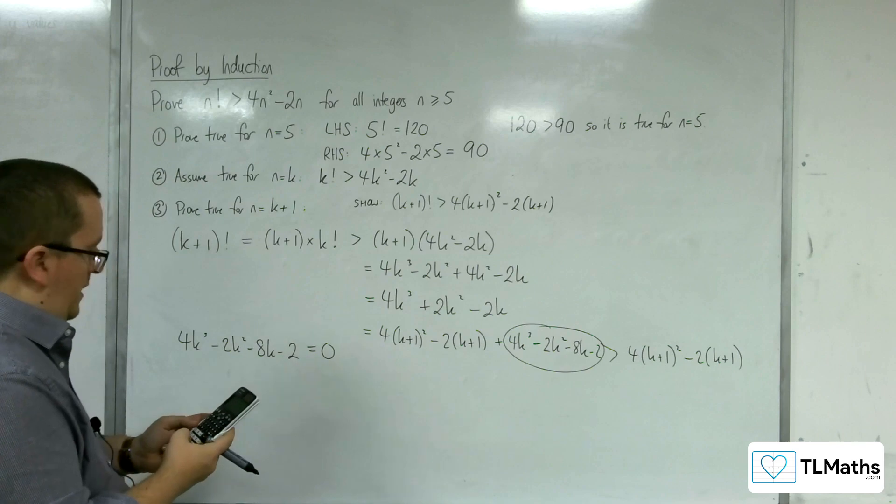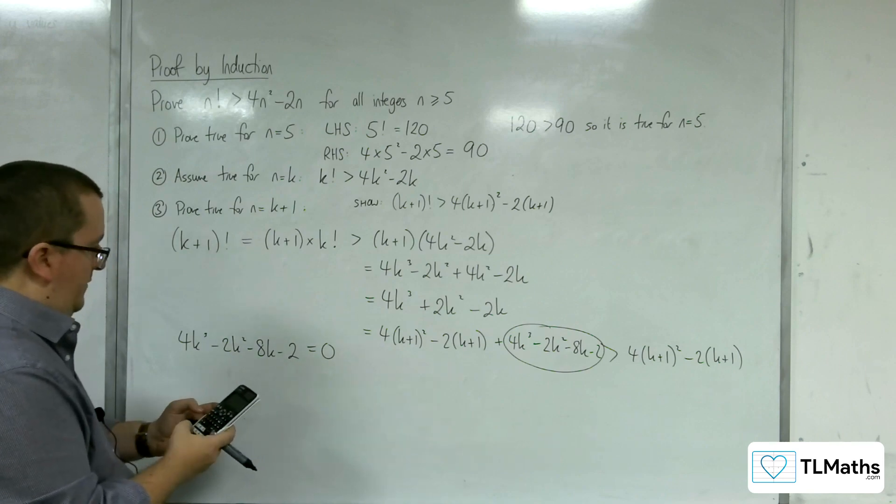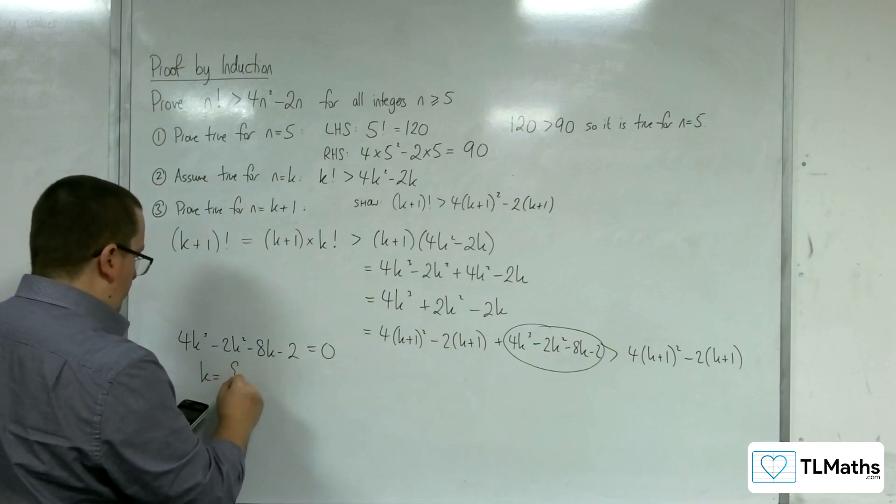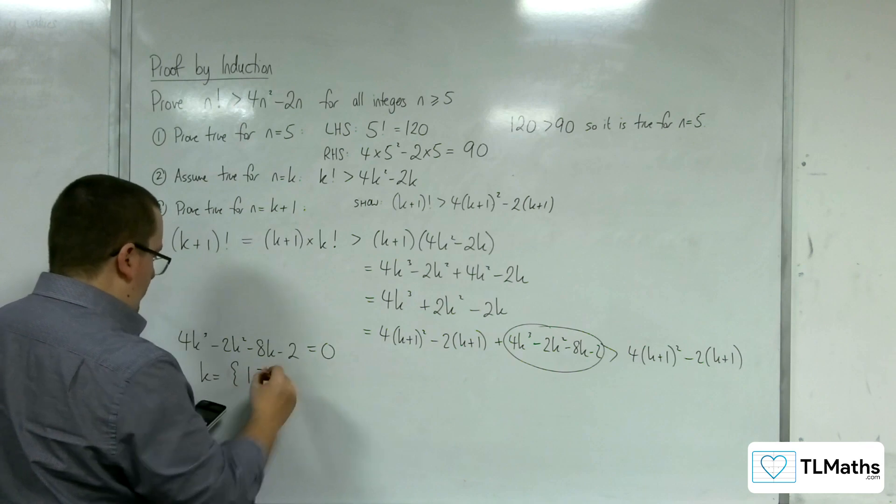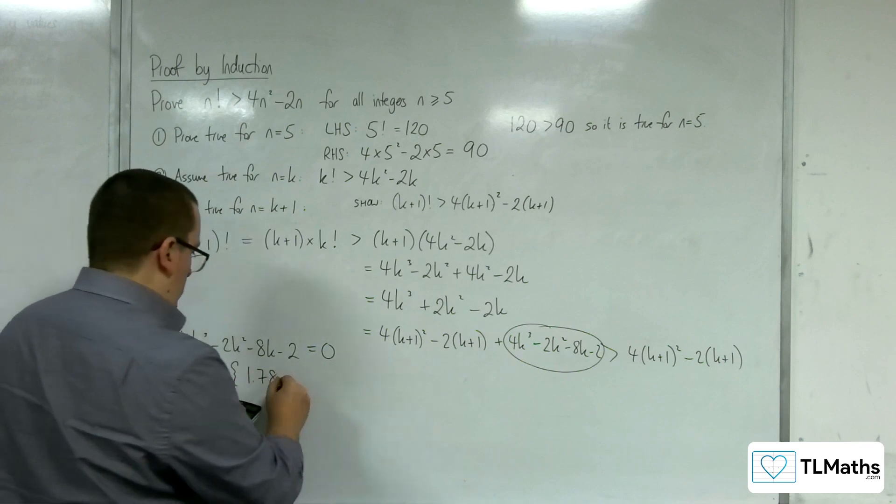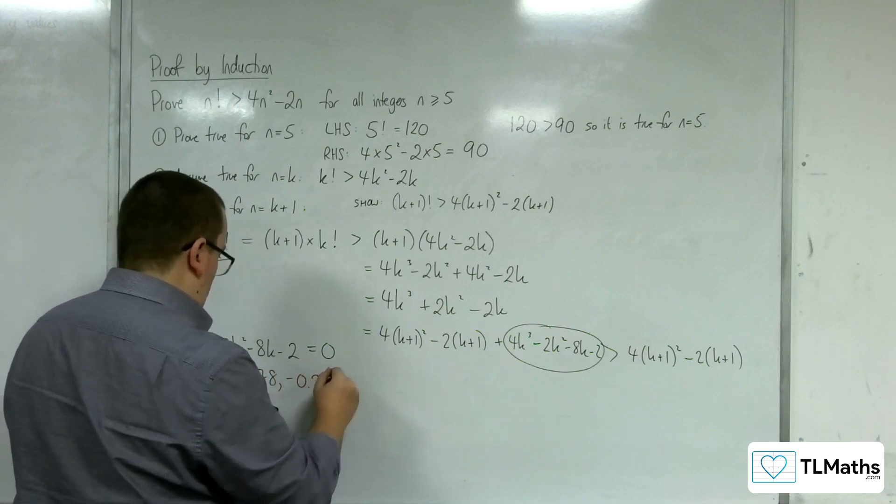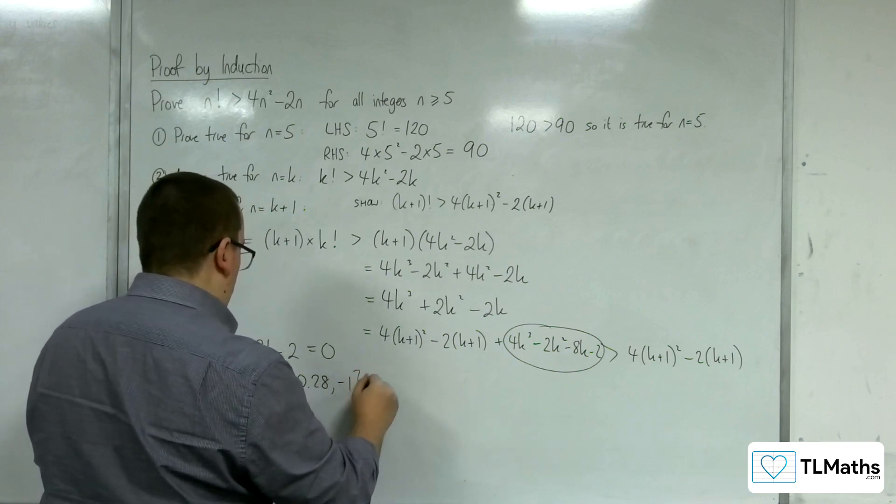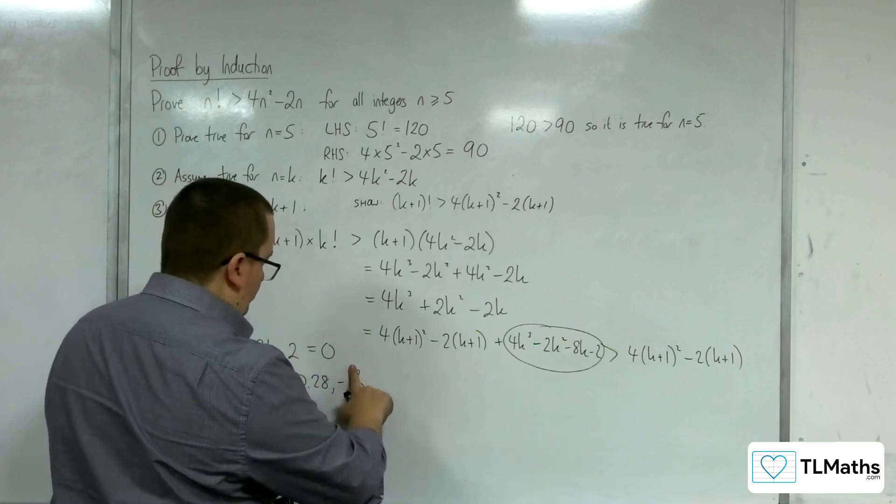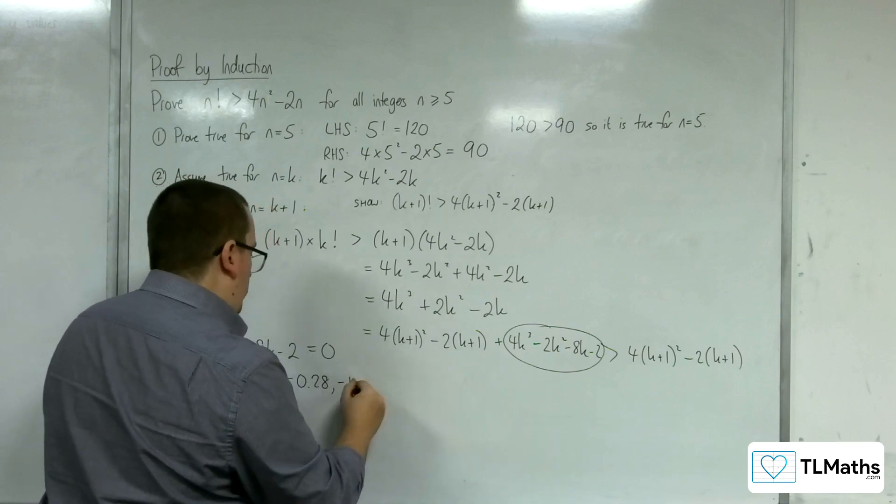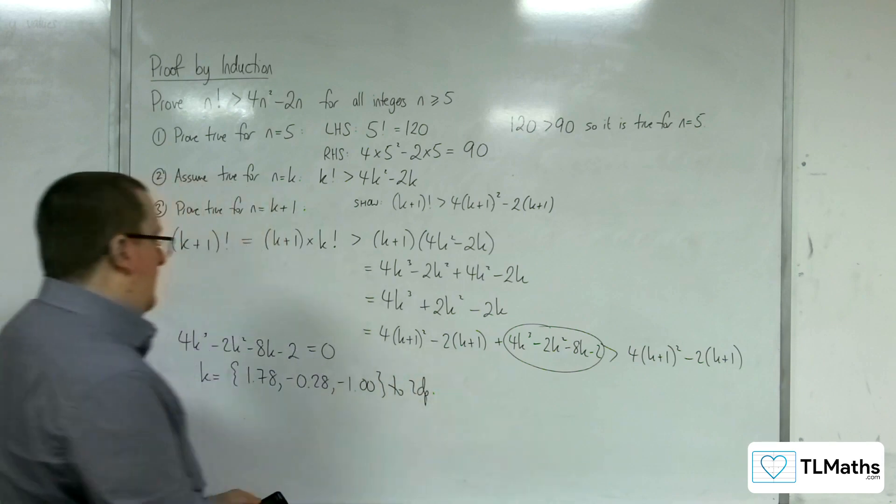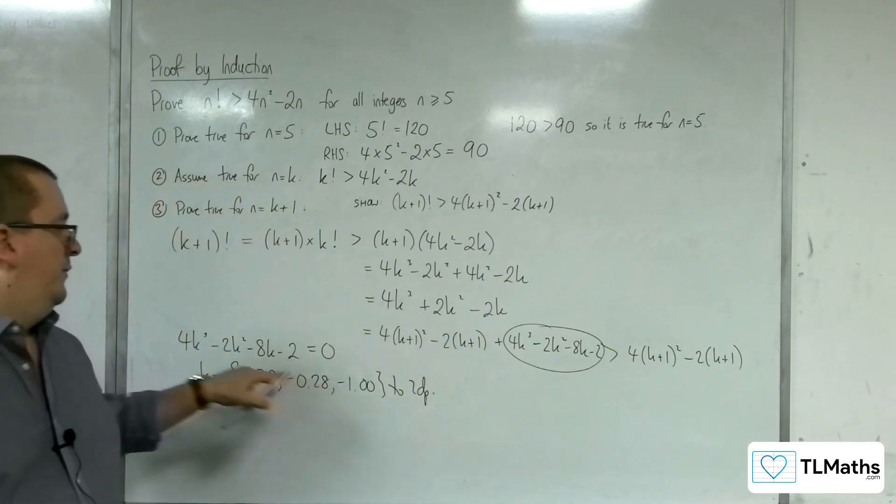So cubic 4, negative 2, negative 8, negative 2, and we get that k would have to be 1.78, minus 0.28, and minus 1.00 to 2 decimal places. OK, so these are the 3 roots of that equation.